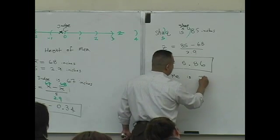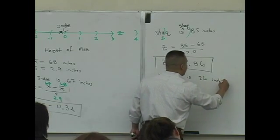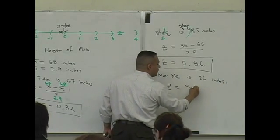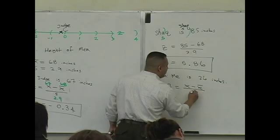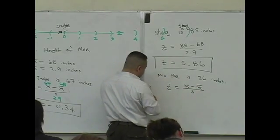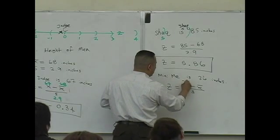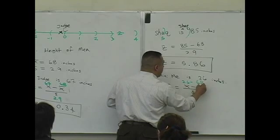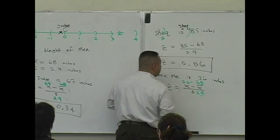26. 26 inches, okay. Let's check Mini-Me's relative position in relation to everyone else. So his height is 2.6, and the mean is 68, standard deviation of 2.9, what do we get?